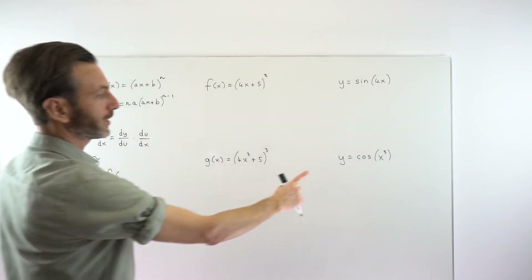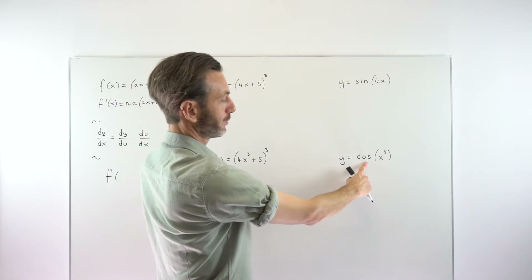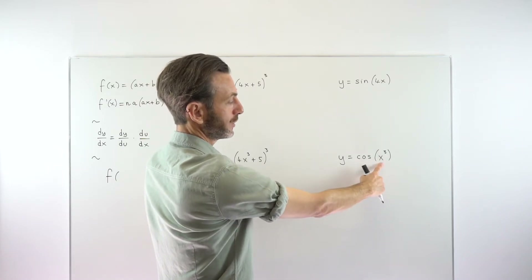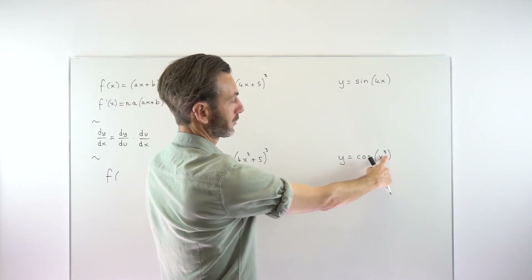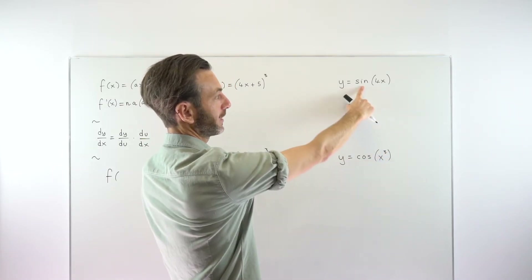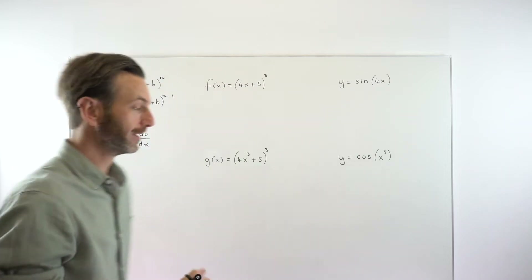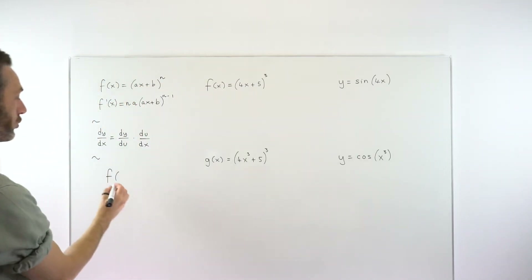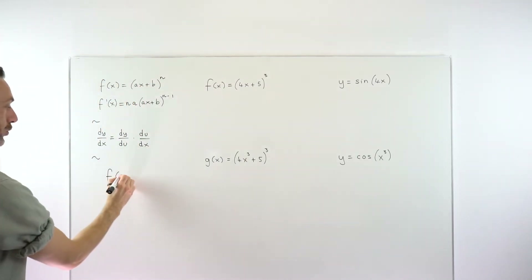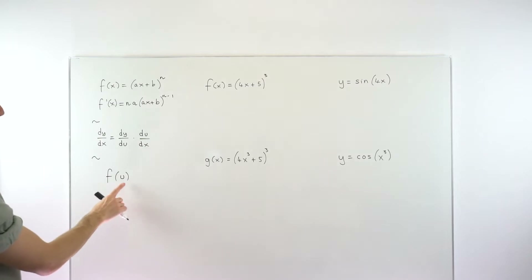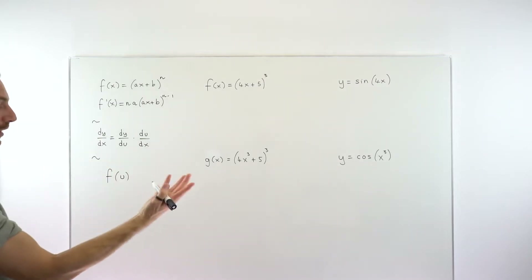For example, this cosine function would be our f, but it's got x cubed inside. This sine would be our f, but it's got 4x inside. In general, that function inside is called u — so we're just dealing with some f of u function.